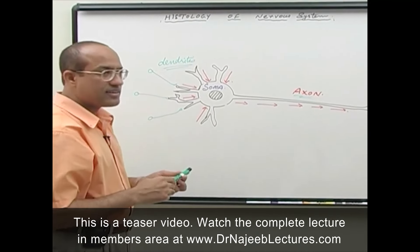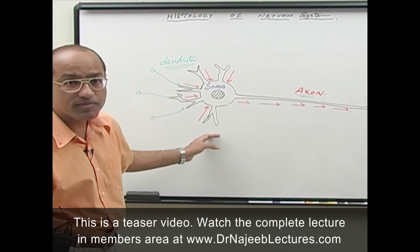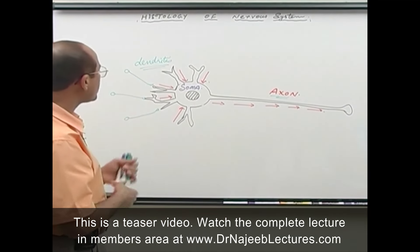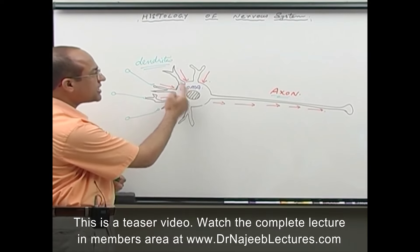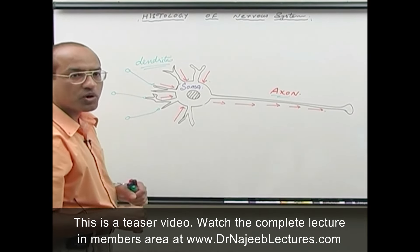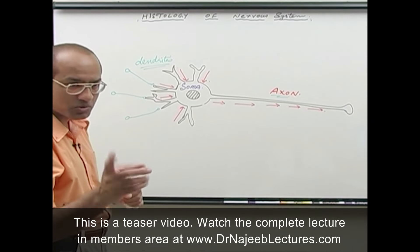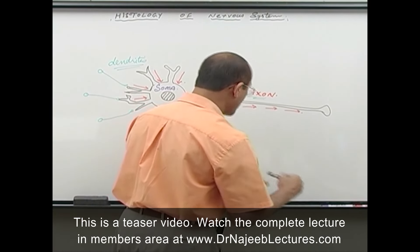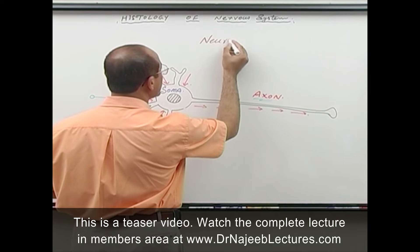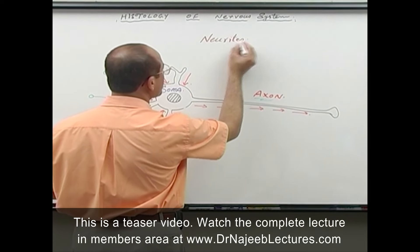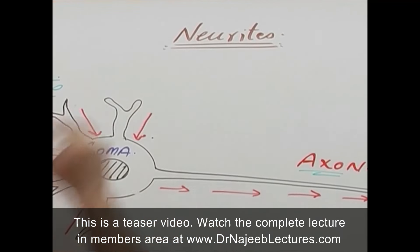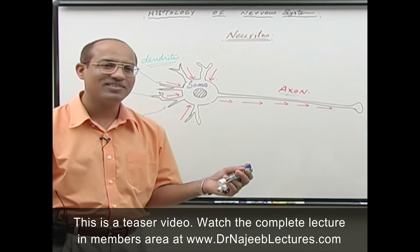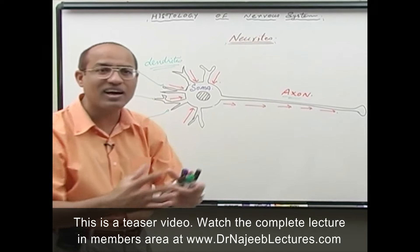Typically, one neuron may have many dendrites but only one axon. Such neurons which have many dendrites and one axon are called multipolar neurons — we will go into that detail later. There is another term commonly used: neurites. Neurites are all the extensions coming from the neuronal cell body — all the dendrites and axons together are called neurites.